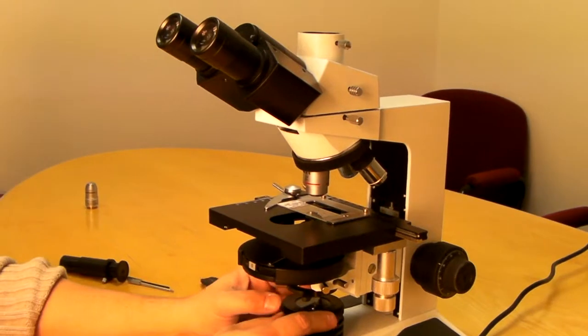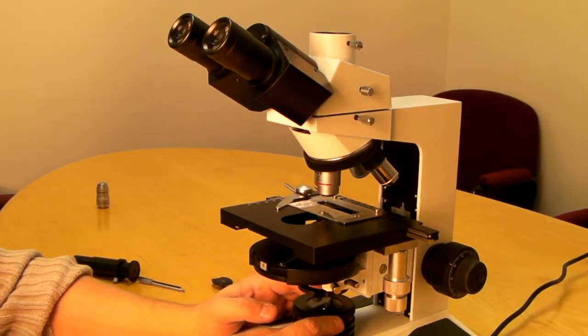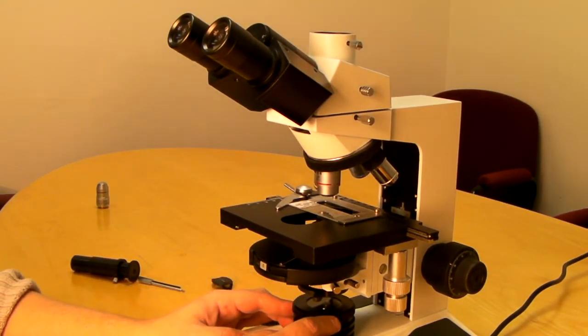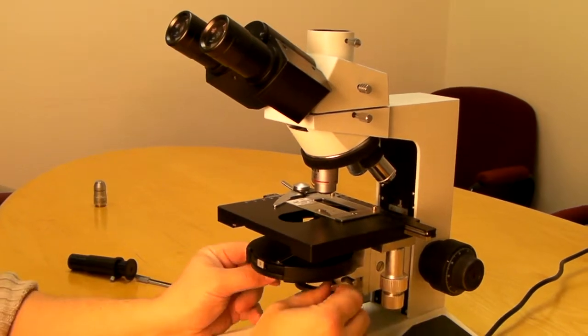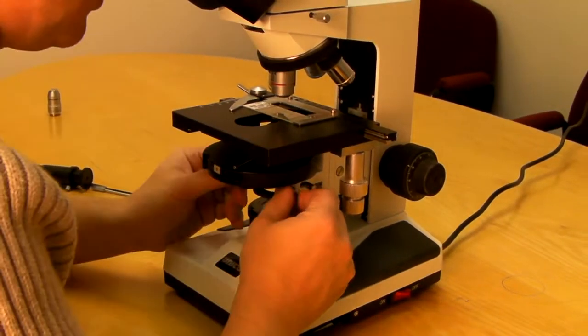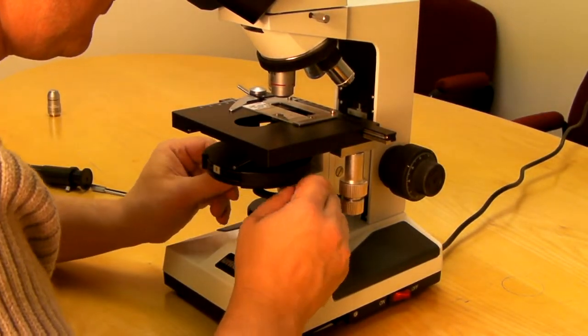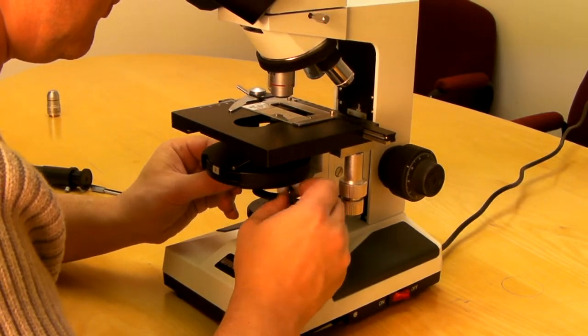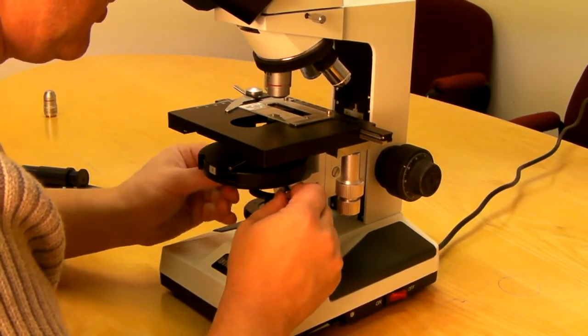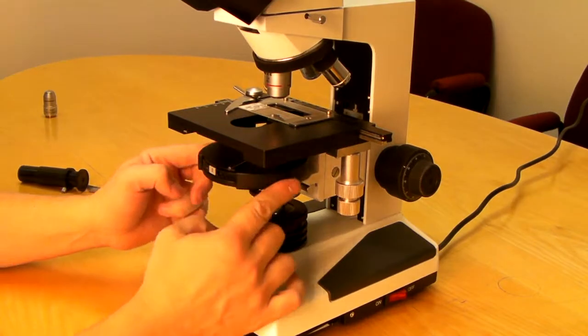You will see a small bright spot in the center of your field. If it's not in the center, use these two screws to position the condenser in the middle.